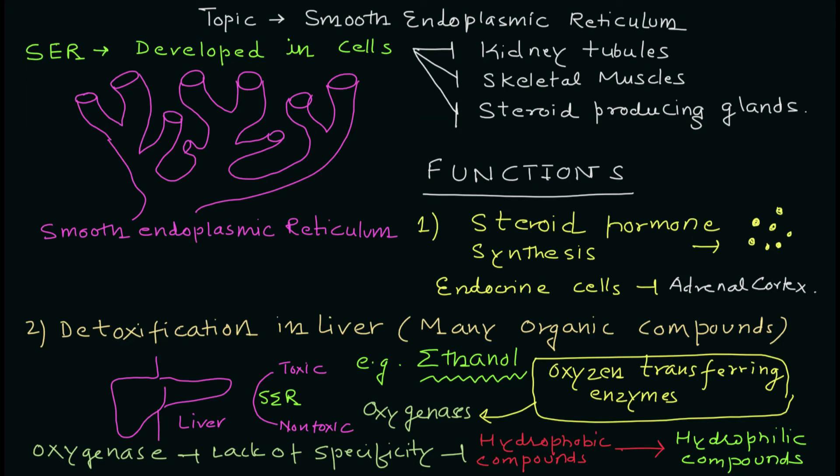This was the brief topic that I want to discuss about the smooth endoplasmic reticulum, where we have discussed what are the different cell types, what is the structure of endoplasmic reticulum, especially the smooth one, what is the function, especially steroid hormone synthesis and detoxification in the liver. We have also understood the concept of oxygenases in this particular video.